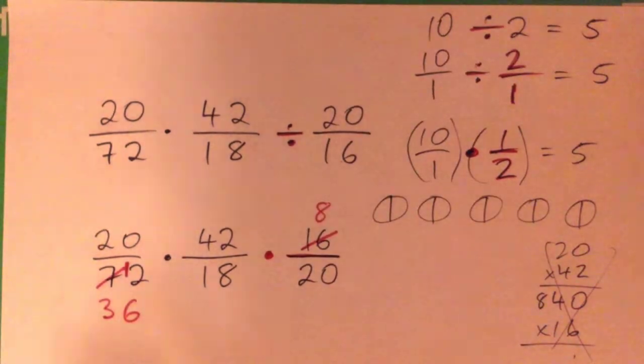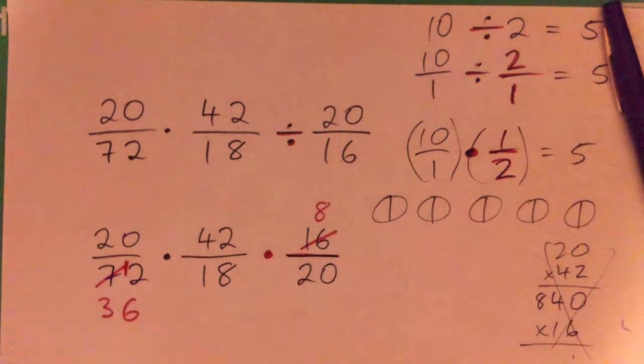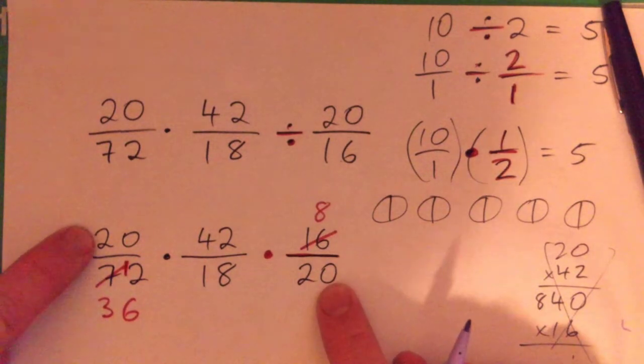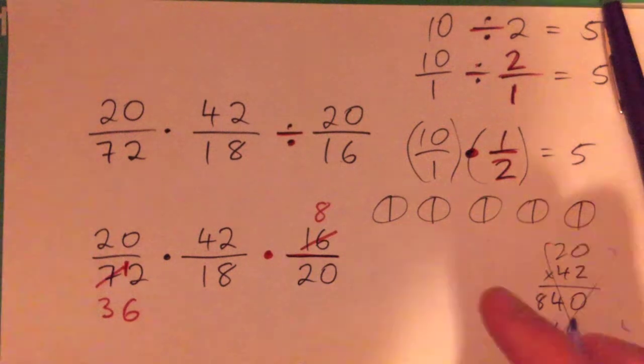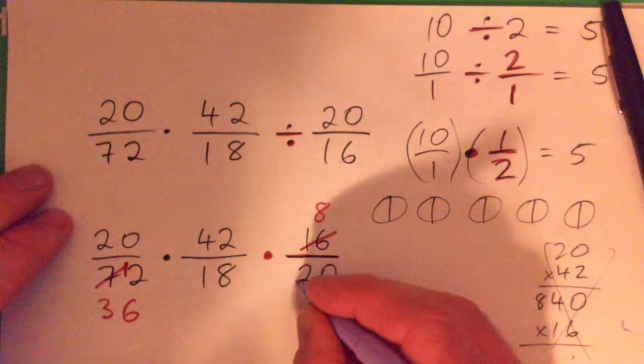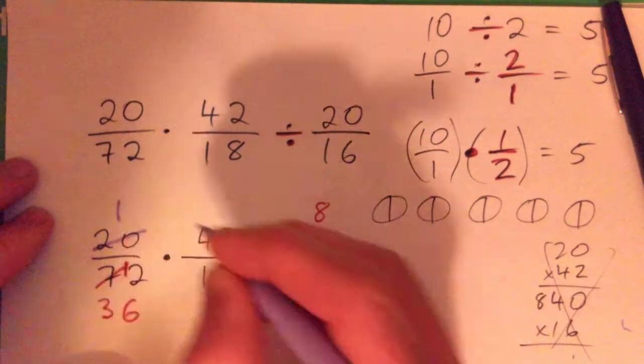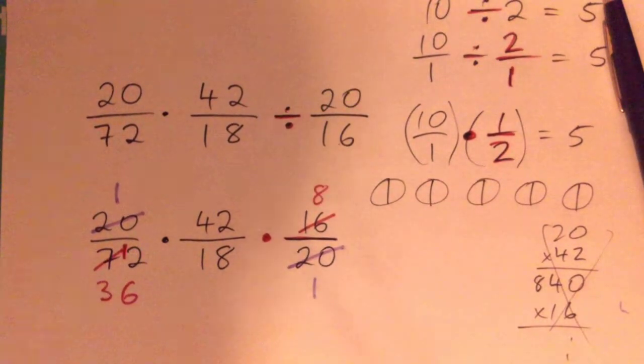So what else can we cross-cancel? 2 into 20 and 18. Yep. How about, just for fun, did you notice there's a 20 in the top and a 20 on the bottom? What? Did we just cross those off? Like, can't we just cross these off? Yeah. Right. So that would get us there faster, right? 20 to 20 goes once here and here, right? Good. Alright.